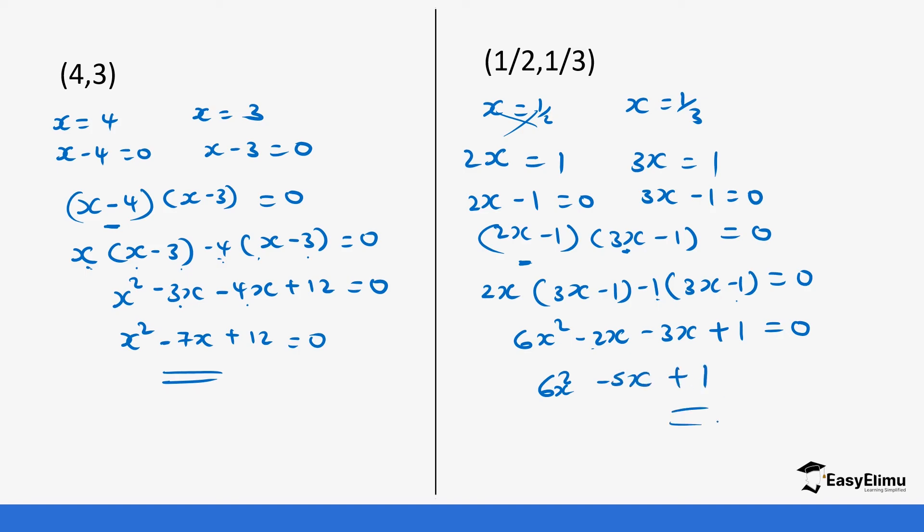Let's do a few more questions. In this case we have a mixture. Before we had both values either whole numbers or both fractions. Now let's do the final example where one value is a fraction and one is a whole number.